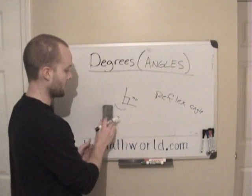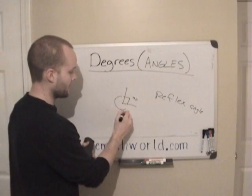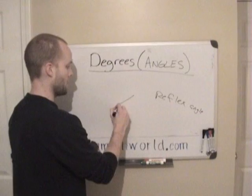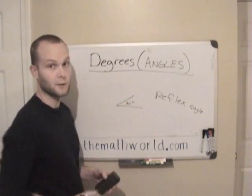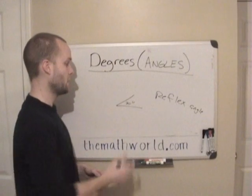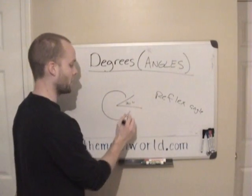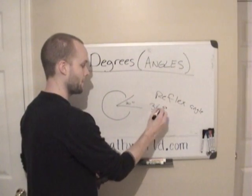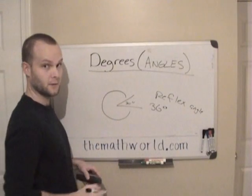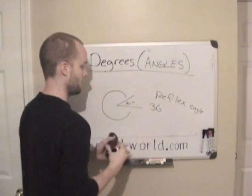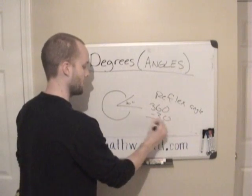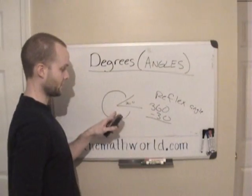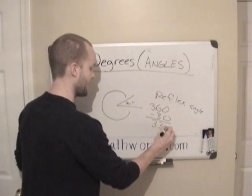If they just ask for the 90-degree angle, you don't have to worry about the reflex angle. But if they give you an acute angle — let's say 30 degrees — and they ask what's the reflex angle, the reflex angle is this entire degree all the way around. Since we know the entire circle is 360 degrees, the reflex angle would be 360 minus 30, which equals 330 degrees. So we have our acute angle of 30 degrees and our reflex angle of 330 degrees.